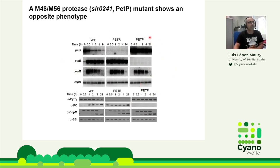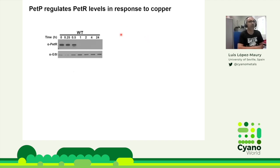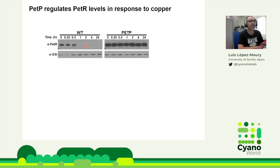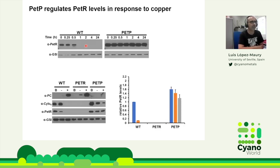Because the second gene is a protease and PETR is a transcriptional factor, we thought the protease might regulate the levels of the transcriptional factor in response to copper — and that was indeed the case. When we analyzed PETR levels after copper addition, we see a clear decrease, and this decrease is not seen in a PETP mutant lacking the protease. The steady-state levels of PETR in the PETP mutant are always higher than wild type, even higher than wild type in the presence of a copper chelator, confirming the protease is regulating the system.